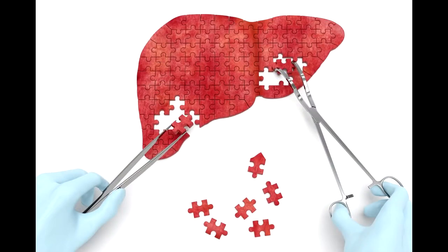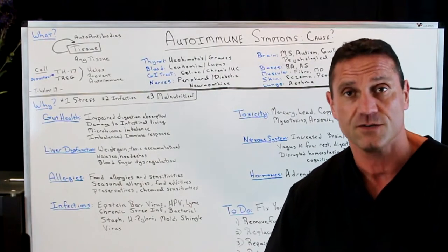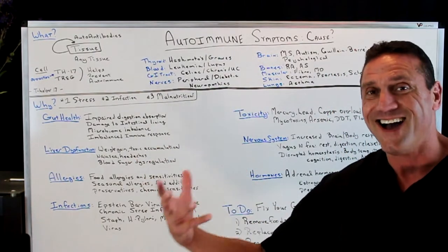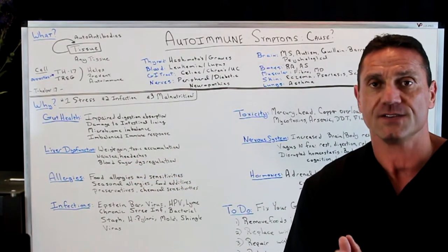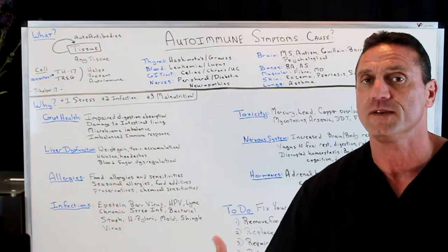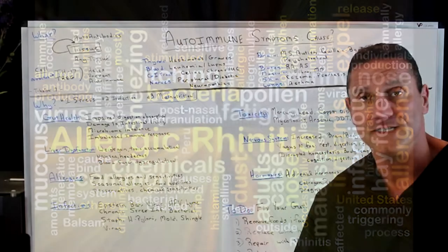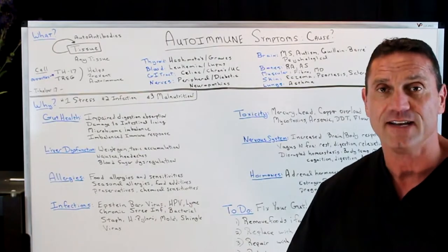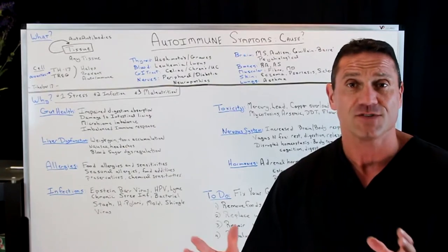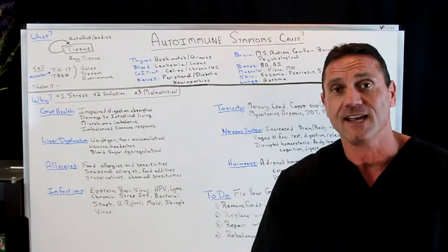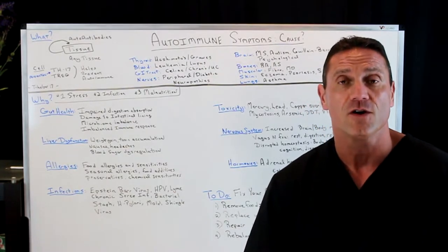Liver dysfunction — if you have a liver dysfunction, whether it's a fatty liver due to medications or diet, you're going to have weight gain, toxic accumulation, nausea, headaches, blood sugar dysregulation. Yes, it's all going to trigger and cause your autoimmune condition. Allergies — food allergies, food sensitivities, seasonal allergies, food additives, preservatives, chemical sensitivities. Your body doesn't like any of this stuff, so if you introduce all this insult to your body, it's going to create an immune response and trigger your autoimmune condition.